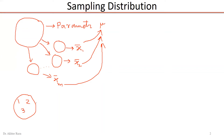We can compute the population mean mu, which is equal to 1 plus 2 plus 3 divided by 3, which equals 2. So the population mean is 2. In reality we cannot always calculate the population mean directly, but in this example we are considering a very small population and we computed the mean by adding all three numbers and dividing by 3.